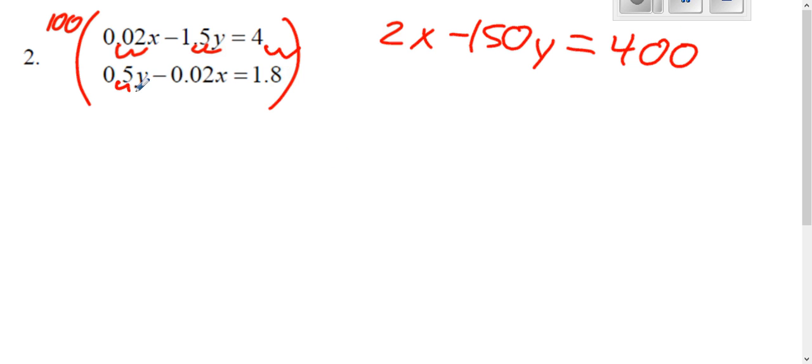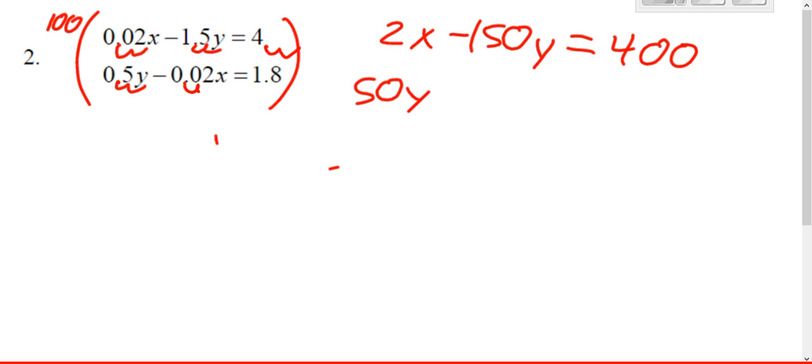Same thing on the bottom equation. Move the two spots, you get 50. Move the decimal two spots. Yep, minus 2x, move the decimal two spots, you get equals 180.